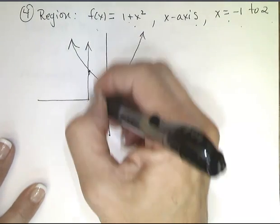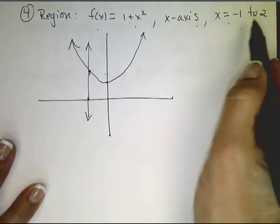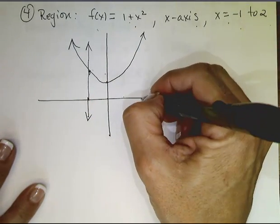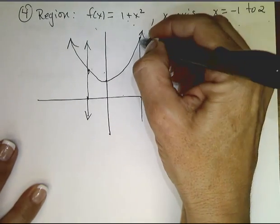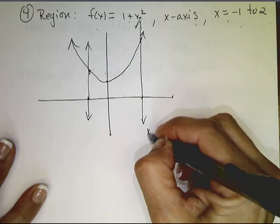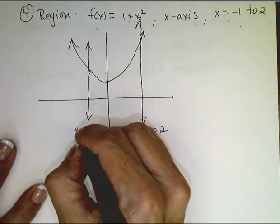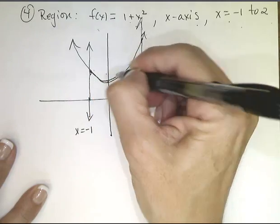Draw this line. And then 2 passes through the point 2, 5, right? That's what it looks like. This is the line x equals 2. This is the line x equals negative 1. Here's my curve F.